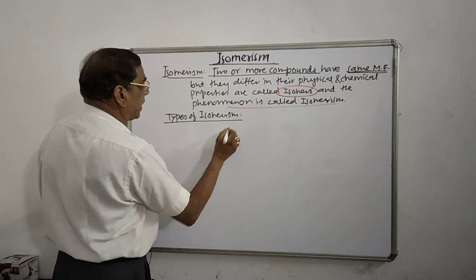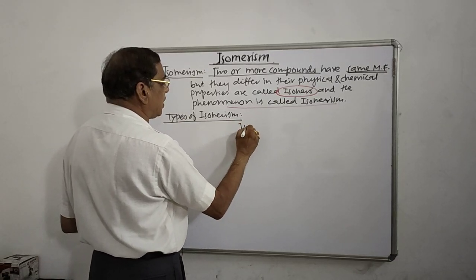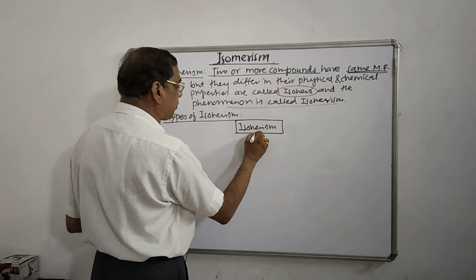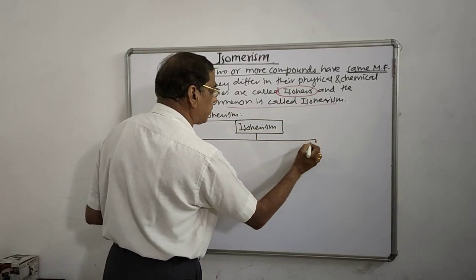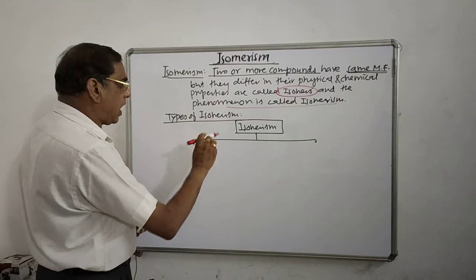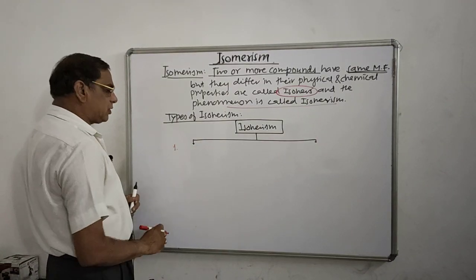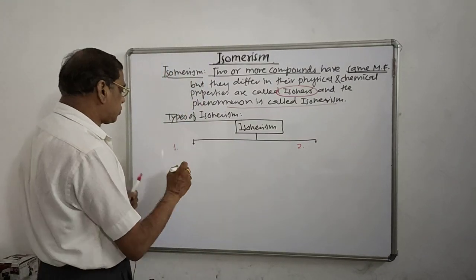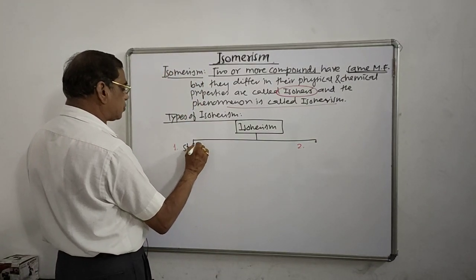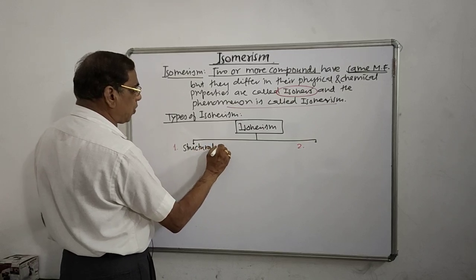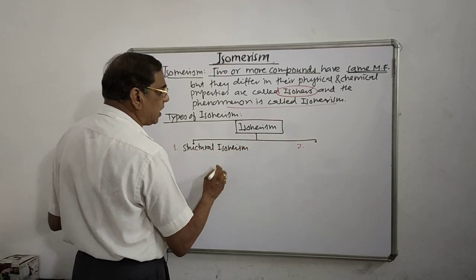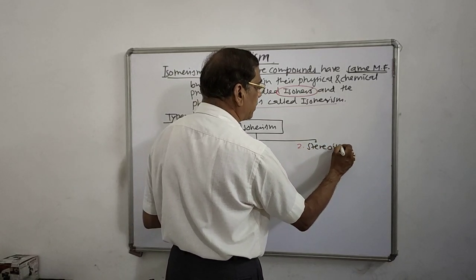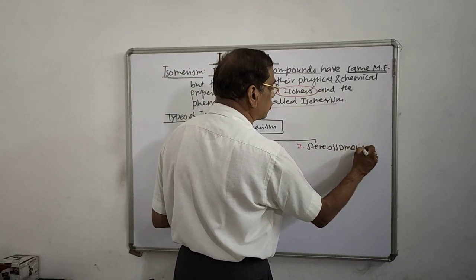Now let's see what are the types of isomerism. Isomers are classified into two main types: one is called structural isomerism, and the second one is called stereo isomerism.